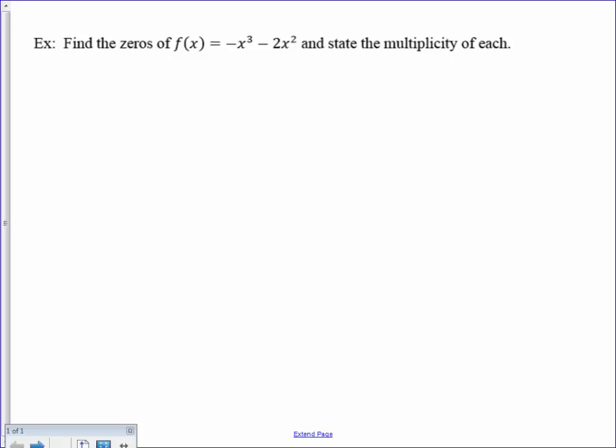There are other facts about zeros, and also factors that relate to each other that we need to know. There is also a term that we call multiplicity, and I'll explain to you what that means.